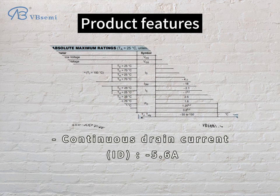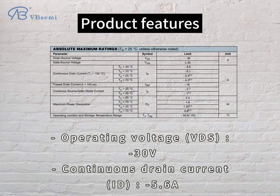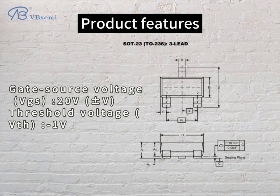Product features: Operating Voltage VDS -30V, Continuous Drain Current ID 5.6A, Gate Source Voltage VGS -20V, Threshold Voltage VTH -1V.